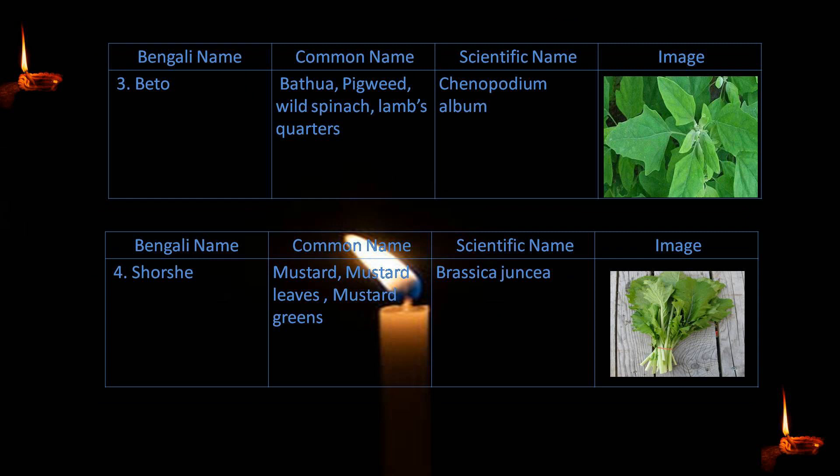3. Betu — bathua or pigweed or wild spinach, also called lamb's quarters — Chenopodium album. 4. Shotshe — mustard leaf or mustard greens — Brassica juncea.